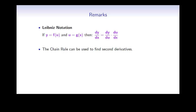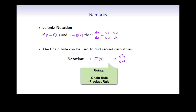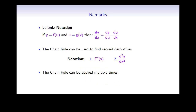Secondly, the chain rule can be used to find second derivatives. The notation for second derivatives is either f double prime of x or d squared y dx squared. When computing the second derivative of a composite function, you will need to use the chain rule along with the product rule. Finally, the chain rule can be applied multiple times. If F of x is f of g of h of x, then F prime of x is f prime of g of h of x times g prime of h of x times h prime of x — working from the outermost to the innermost function, computing derivatives along the way.